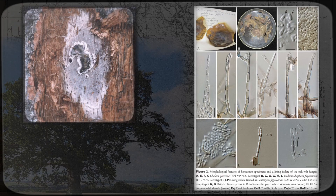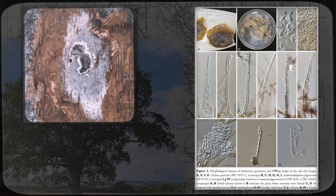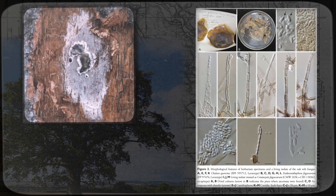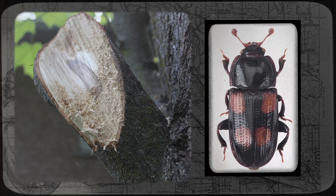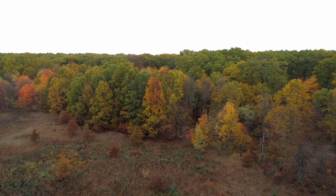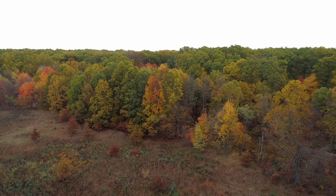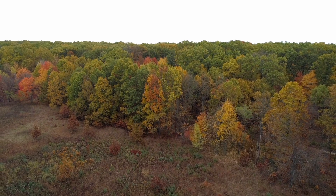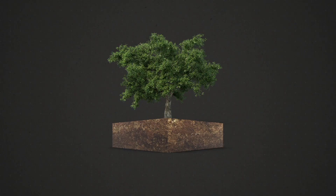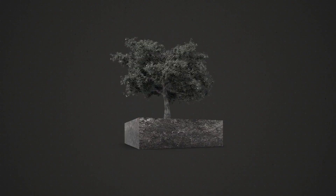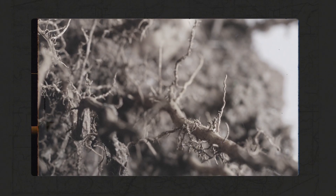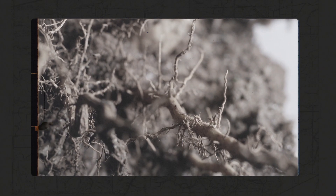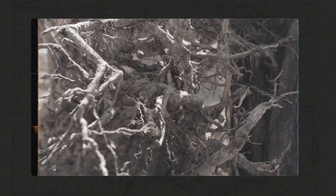The oak wilt fungus can be spread to healthy trees both above and below ground. Sap-sucking beetles attracted to wounded trees and oak wilt spore mats can transmit the spores of the fungus to areas of damaged bark on healthy trees. Once infected, an oak tree becomes a vector, transferring the fungus underground through roots that are naturally fused or grafted with neighboring trees.